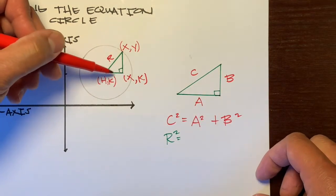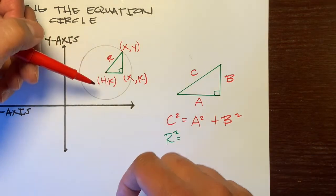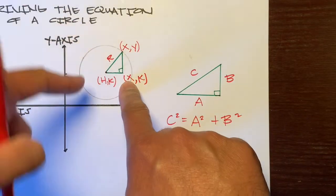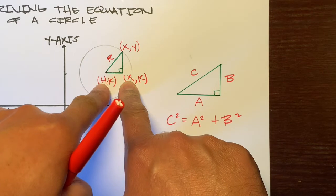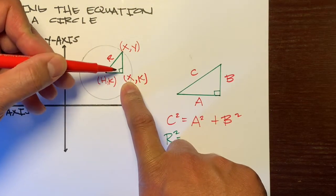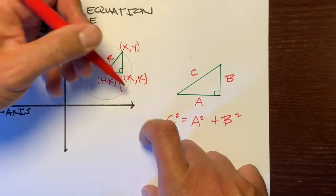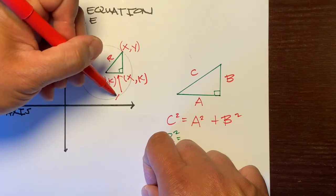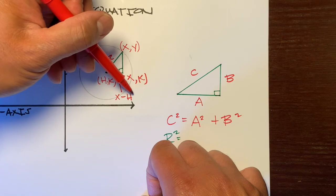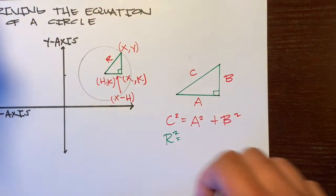Let's use these three points to figure out the distance from here to here so we could get that A value in our Pythagorean theorem. If this line is horizontal, we're only going to focus on the horizontal values in our coordinates. Those horizontal values are X and H. So this distance would be X minus H.